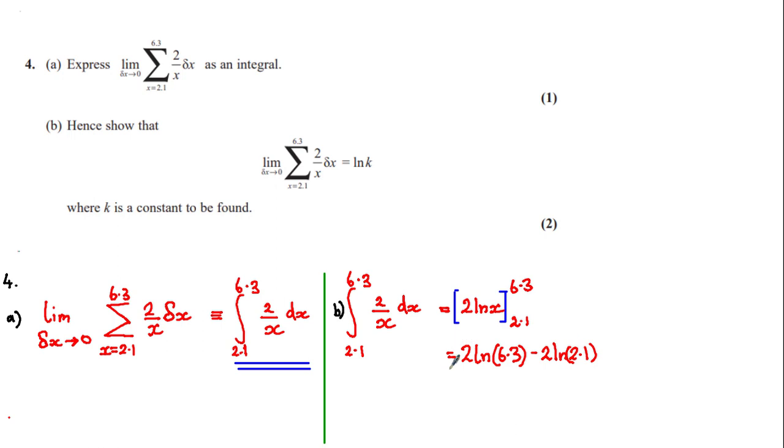So this is equal to 2 ln of 6.3 minus 2 ln of 2.1. We can see that the answer we're looking for is ln of some value. So using the power laws, we can bring the 2's to the top. So this is equal to ln of 6.3 squared minus ln of 2.1 squared.